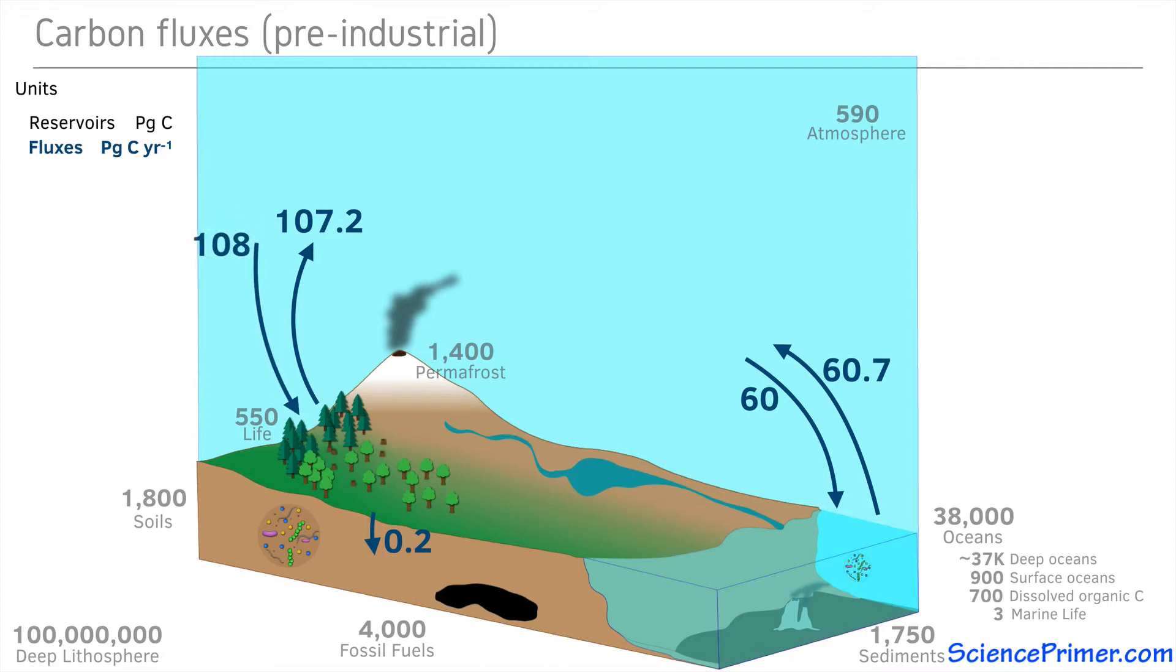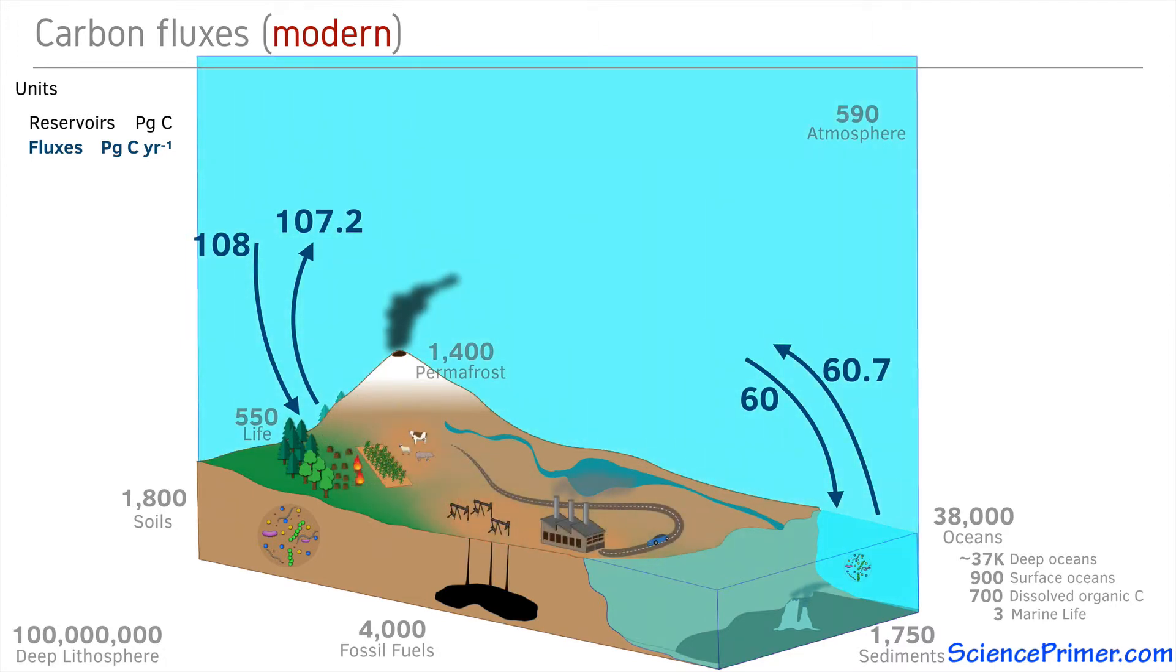This all changed in the mid-1800s when we began to clear more and more land for agriculture and burn large quantities of coal, then eventually oil and natural gas. Starting at relatively low levels, these changes have grown until in modern times the use of fossil fuels and cement production transfer about 7.8 petagrams of carbon from the lithosphere to the atmosphere every year.